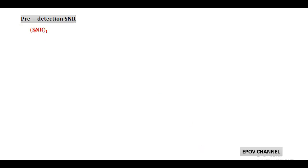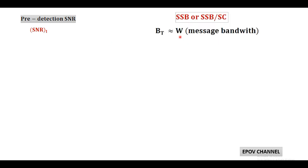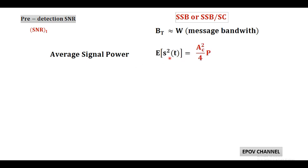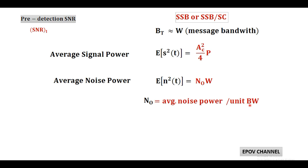Next, for noise performance, we first derive the input SNR, also called the pre-detection SNR. In SSB suppressed carrier, the transmission bandwidth equals W, which is the same as the message bandwidth. The average signal power for SSB is E[s²(t)] = ac²/4 · P. The average noise power E[n²(t)] equals N₀ · W, where N₀ is the average noise power per unit bandwidth. From this, the input signal-to-noise ratio equals ac²P / (4N₀W).